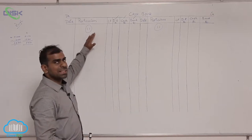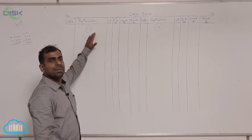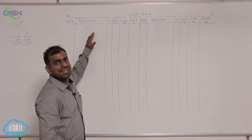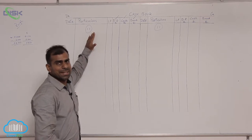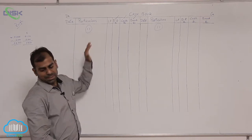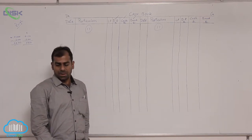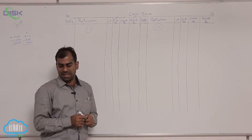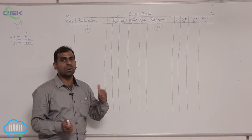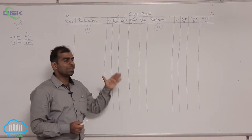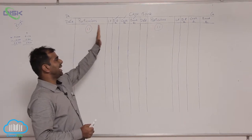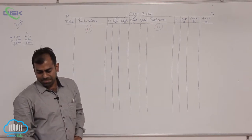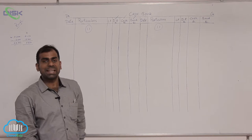We are going to discuss the 11th problem — only important transactions and their treatment. On November 1st, you are given a cash balance. You know how to deal with it: write 'to balance brought down' and enter the amount in the cash column.